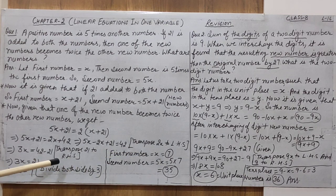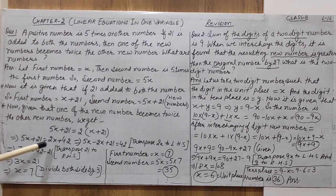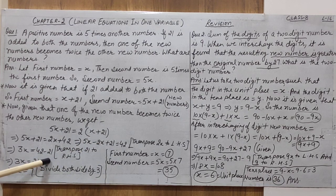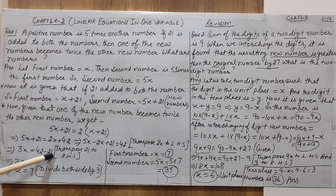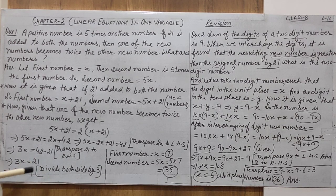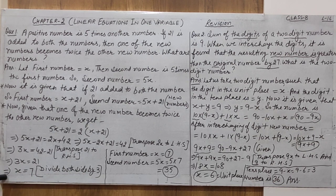Next step: transpose 2x to the left-hand side and 21 to the right-hand side, collecting all variables on one side and all constants on the other. We get 5x − 2x = 3x on the left, and 42 − 21 = 21 on the right. So 3x = 21. Dividing both sides by 3, the answer is x = 7.